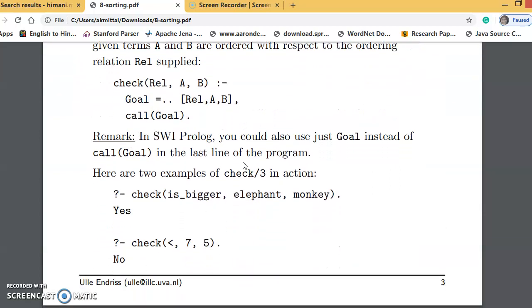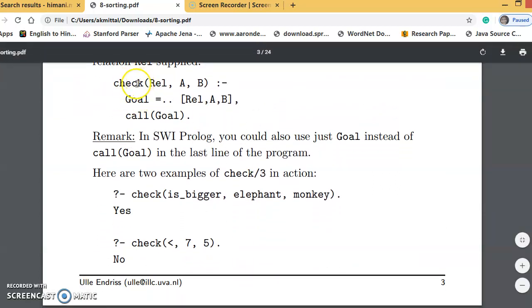Now, there is a function check that we will be using. It is defined with relationship A and B, where A and B are atoms. We define a variable goal and it's defined with equal to double dot. This is a syntax in Prolog and then we will use a list in which we will copy this relation A and B as it is.